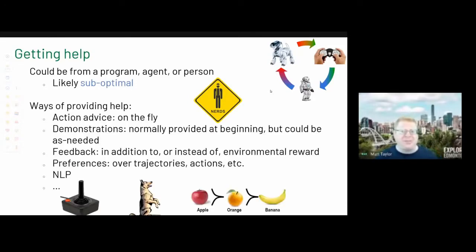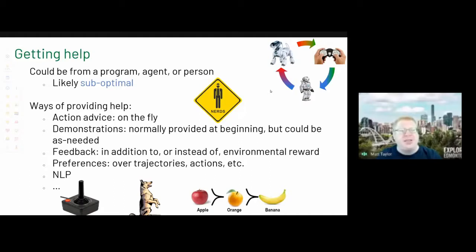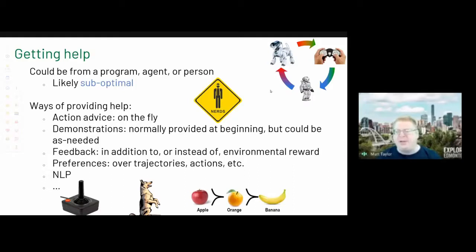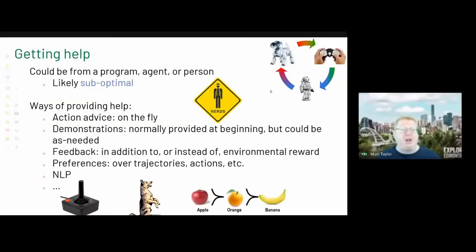There are many options when a person or agent can't hand over Q-values. Action advice: 'What should I do here?' — 'Go up.' Demonstrations: watch someone trade stocks or play Mario, learn on that data, and maybe ask for more. Feedback: just as humans train dogs by saying 'good dog, bad dog,' you could train an agent the same way. DeepMind did work on learning from preferences — saying one trajectory is better than another. There's also natural language, and you could ask an existing PID controller what to do.